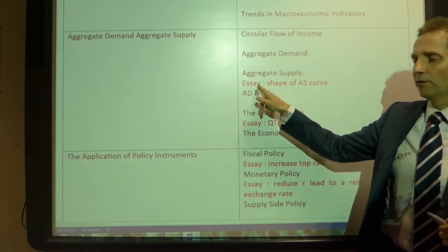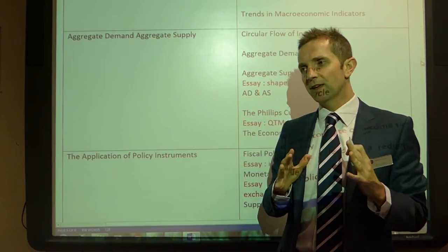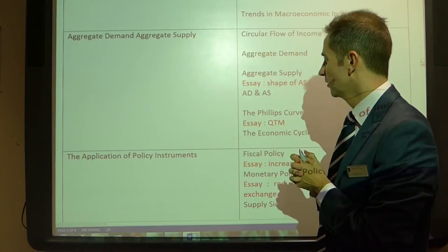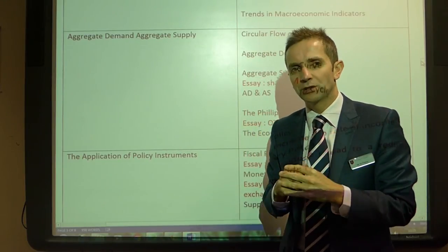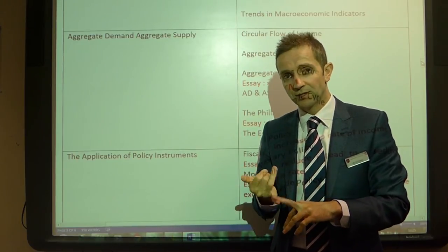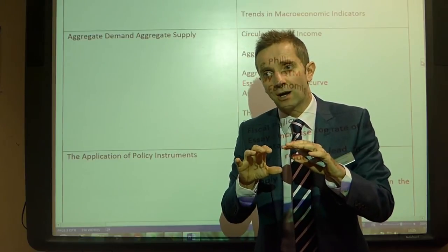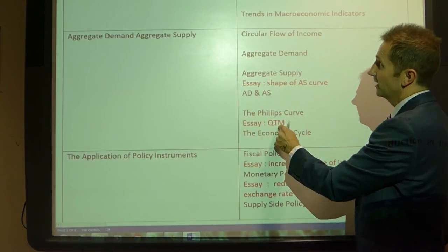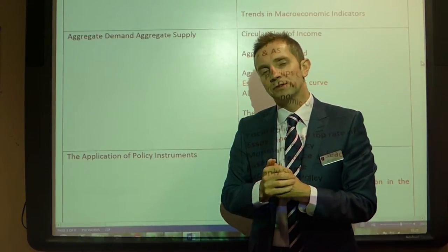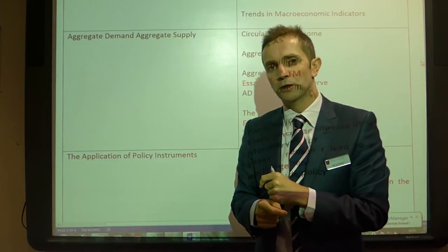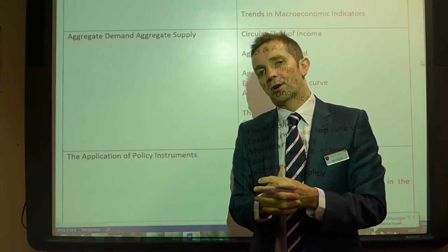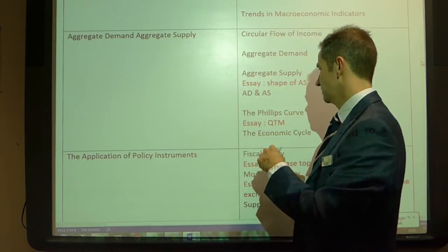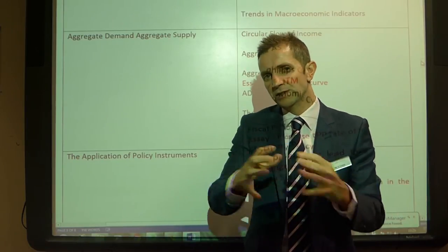On AD/AS, there was a lovely essay on one of the previous papers all to do with the shape of the AS curve — the Keynesian long-run aggregate supply shaped like a backwards L, or the classical perfectly inelastic curve — requiring explanation of which is most realistic. There was also one relating to the quantity theory of money and how as you move beyond the Phillips curve you reach the perfectly inelastic section where any further changes in AD simply lead to rising price levels, tying into a discussion of Keynesian versus classical views.